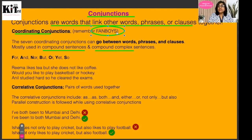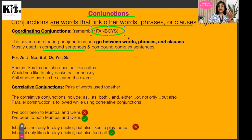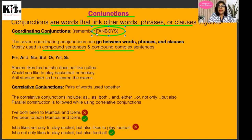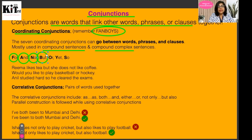How do you remember coordinating conjunctions? It's very simple — FANBOYS. Fanboys is the mnemonic that is used. You are all Jatin Sir's fans here — you have subscribed to his channel and are watching great videos. F-A-N-B-O-Y-S. Girls are also included. So this is FANBOYS — the coordinating conjunctions.